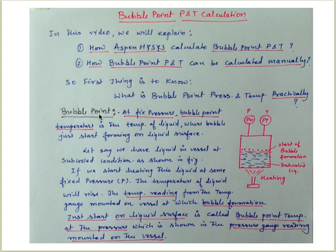What is bubble point at fixed pressure? Bubble point temperature is the temperature of a liquid where bubbles just start forming on the liquid surface. We have shown the bubbles on the liquid surface.